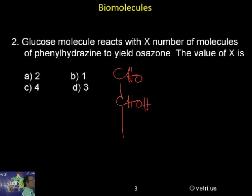Both glucose and fructose undergo reaction with phenylhydrazine hydrochloride to produce osazone. So what is happening? First phenylhydrazine hydrochloride, H2...